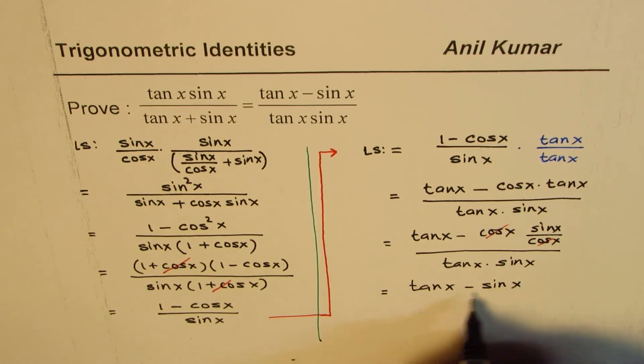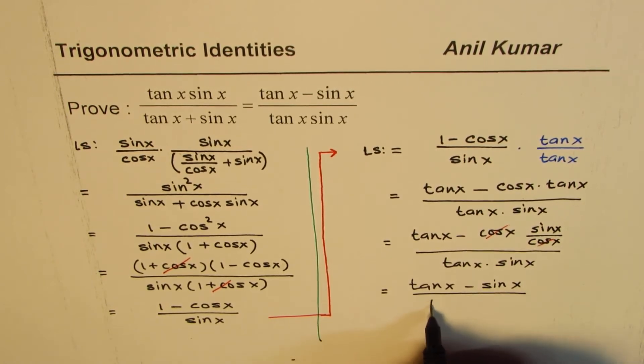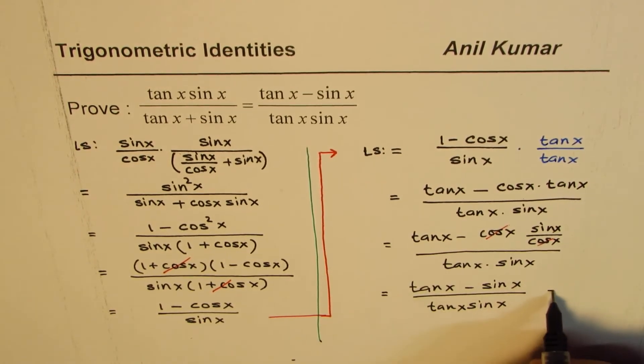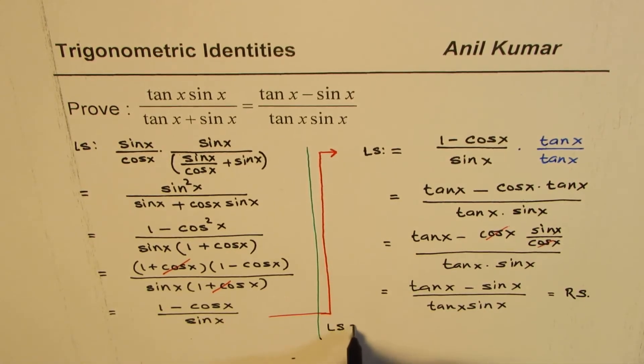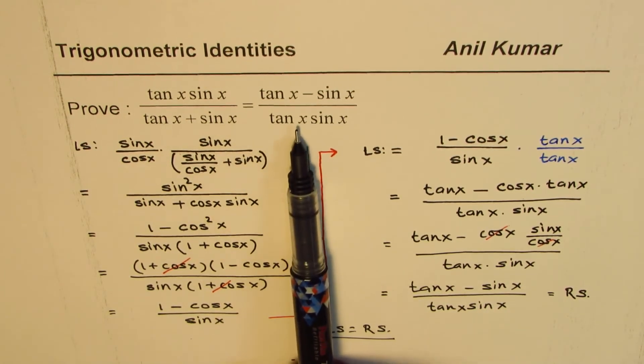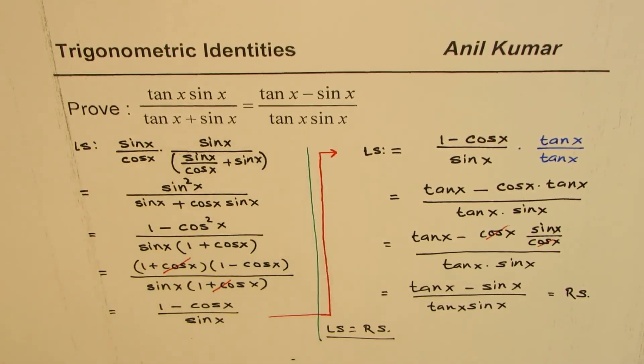Now this cos x cancels out and we get what we really need, which is tan x minus sin x over tan x sin x. That is our right side. So we have proved that left side equals right side, and therefore this is an identity which will be true for all values of x except for few restrictions which will make denominator as zero.